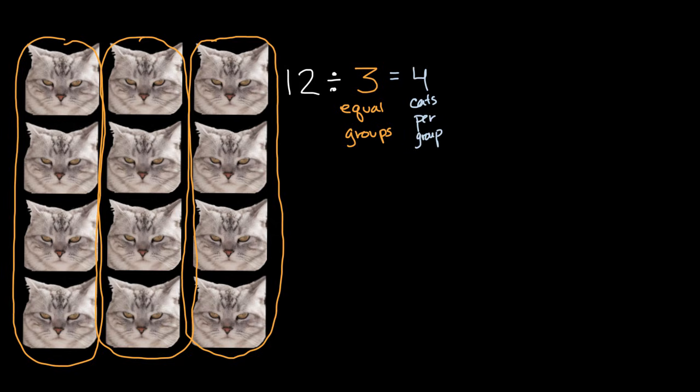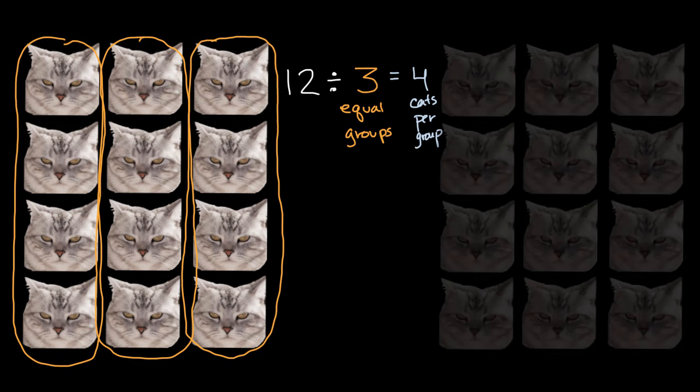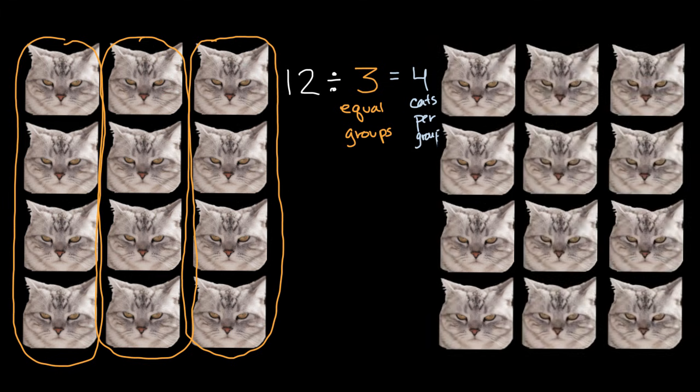Now what if we wanted to interpret it slightly differently? So let's bring in 12 more angry cats, which is always a dangerous thing to do, but we're doing it for the sake of learning, so it's worth it. More angry cats. And now let's imagine 12 divided by three. But this time, we're not going to think about the three as three equal groups. We're going to think about it as 12 divided into groups of three. So groups of three. So each of the equal groups will have three in them, and so then that's going to tell us how many equal groups we are able to have.